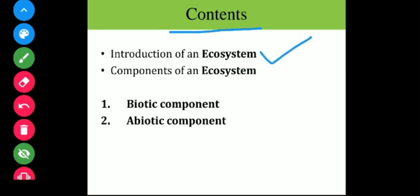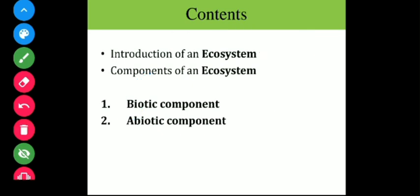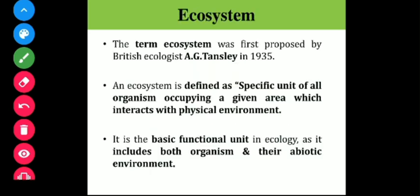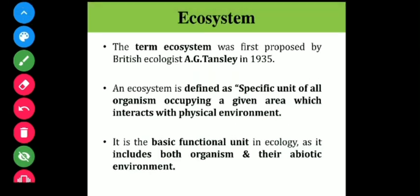We are going to see the introduction of ecosystem and also the components of ecosystem. When I say components, it means what things the ecosystem includes. One of the things is the biotic component, which means living organisms, and next is the abiotic component — the non-living factors that help living organisms for existence or survival.